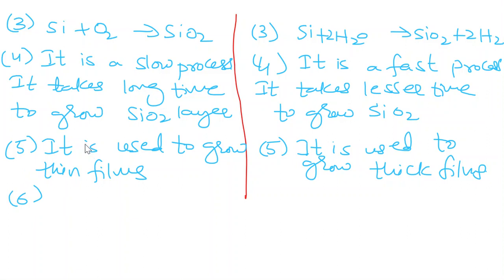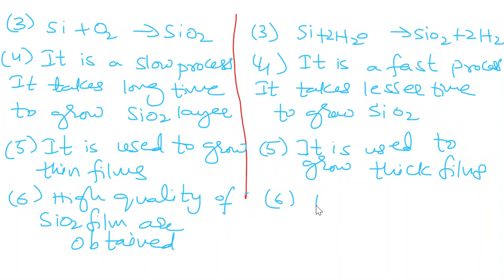Here, even though it is slow process, high quality of SiO2 layer or SiO2 film can be obtained. Here, the quality of SiO2 film is less.